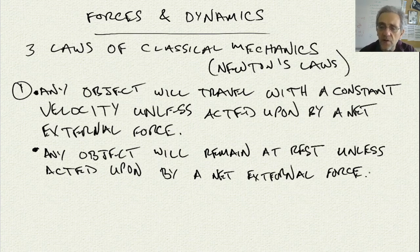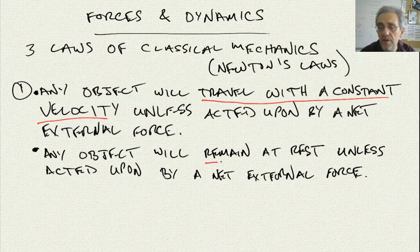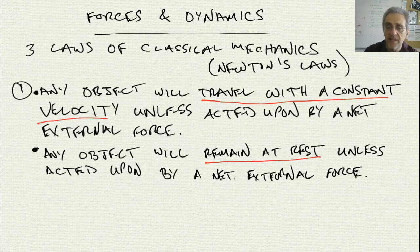You'll notice that they're essentially repeating the same thing. What's different about these two? One says 'travel with a constant velocity,' and the other says 'will remain at rest,' and the rest is the same — unless acted upon by a net external force. Why do we have to have one rule — the first rule of dynamics, classical mechanics — stated twice?